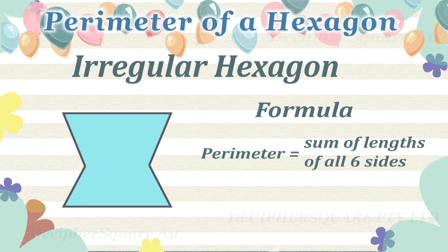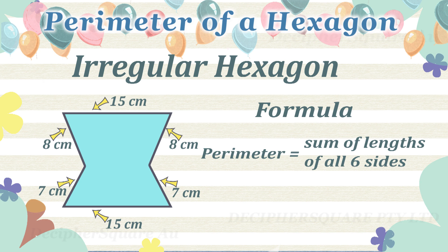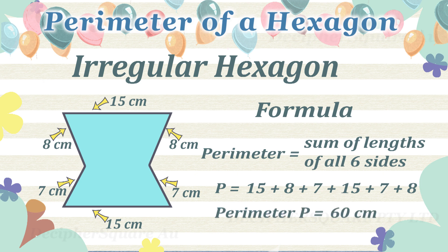This is an example of an irregular hexagon. The length of each of the sides is as shown in the figure. The perimeter of an irregular hexagon equals the sum of the lengths of all six sides. As shown below, the perimeter here is 60 cm.